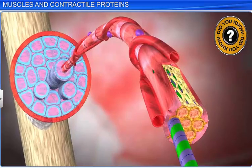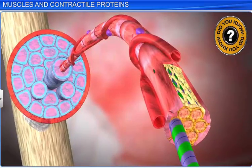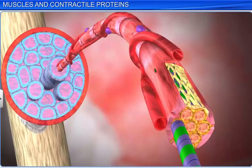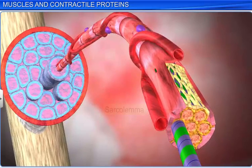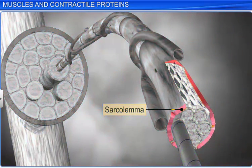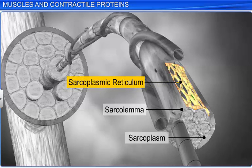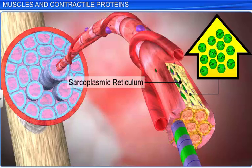The parts of a muscle fiber have been given special names. For instance, the plasma membrane is called the sarcolemma. The cytoplasm is known as the sarcoplasm. And the endoplasmic reticulum is called the sarcoplasmic reticulum. The sarcoplasmic reticulum is a storehouse of calcium ions, which are important for muscle contractions.